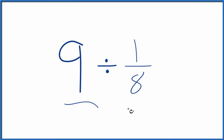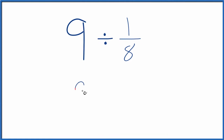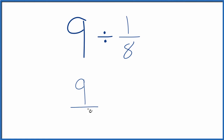Let's divide 9 by 1/8. Here's how you do it. Let's call this 9 over 1 — it's still 9, we're just dividing by 1, but now we have a fraction that makes it easier.